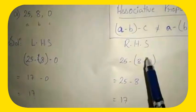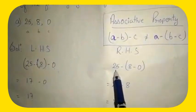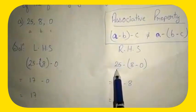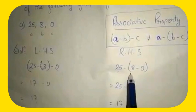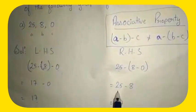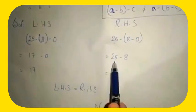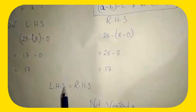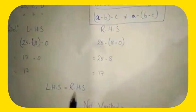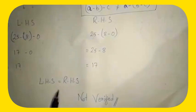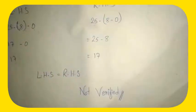Now let us move to the RHS side. In RHS, a is not under bracket, so we write: 25 minus (8 minus 0). Solving the bracket: 8 minus 0 is 8. So we get 25 minus 8, which is 17. That means LHS is equal to RHS. So under the associative property of subtraction, the answer is not verified, since LHS should not equal RHS.